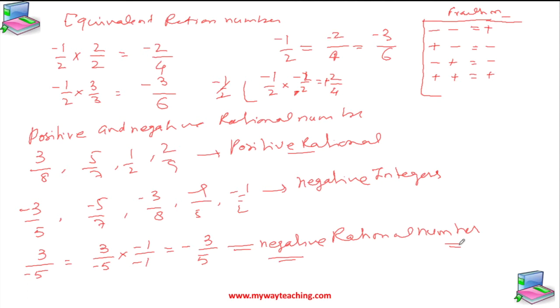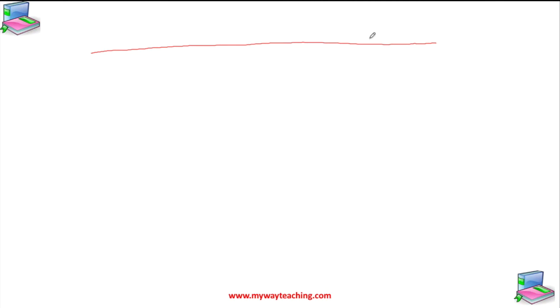Now we will study about rational numbers on a number line. This is the number line: 0, 1, 2, 3 on the positive side, and minus 1, minus 2, minus 3, minus 4 on the negative side.